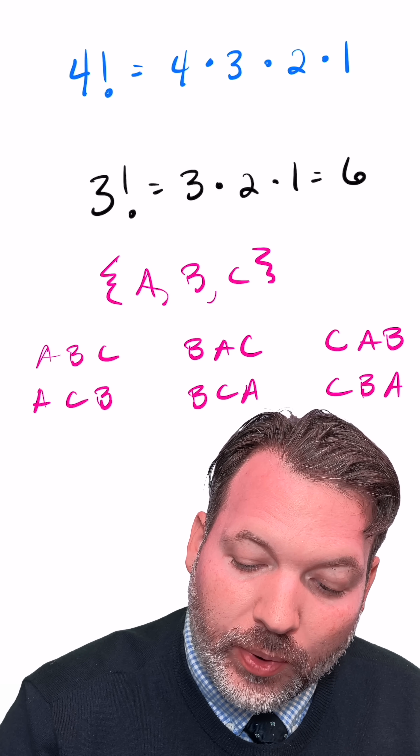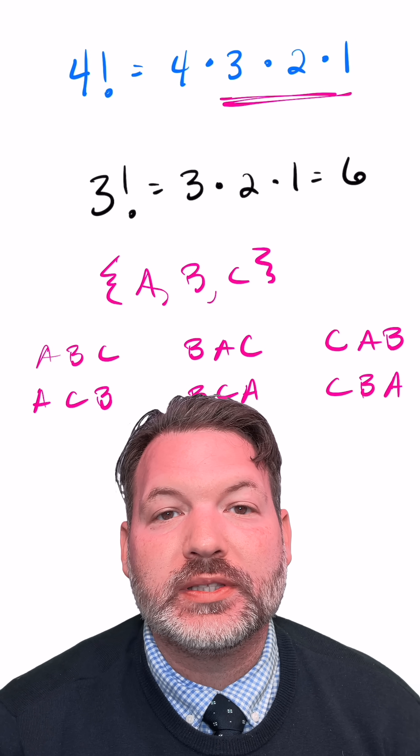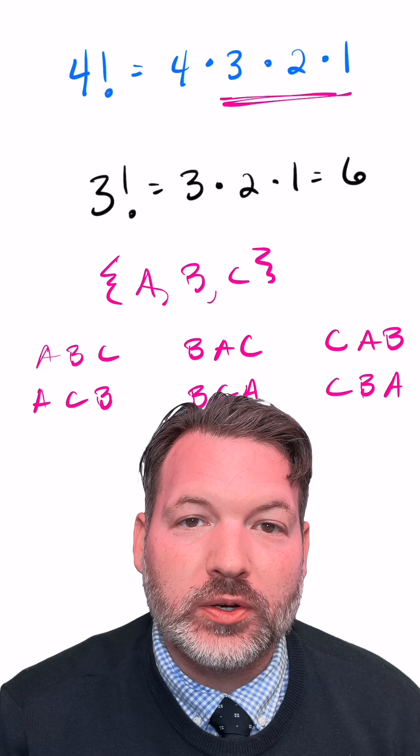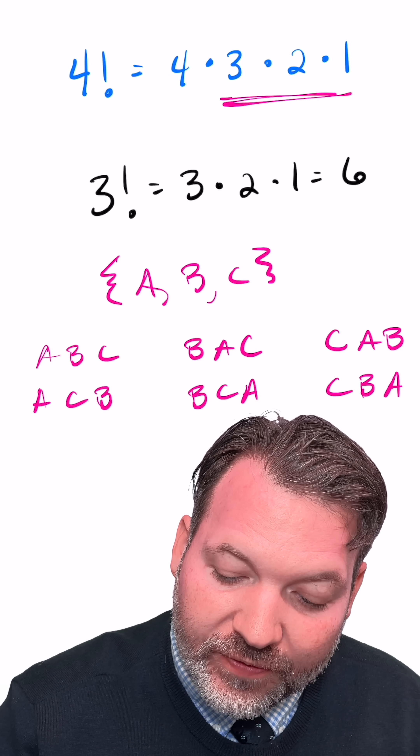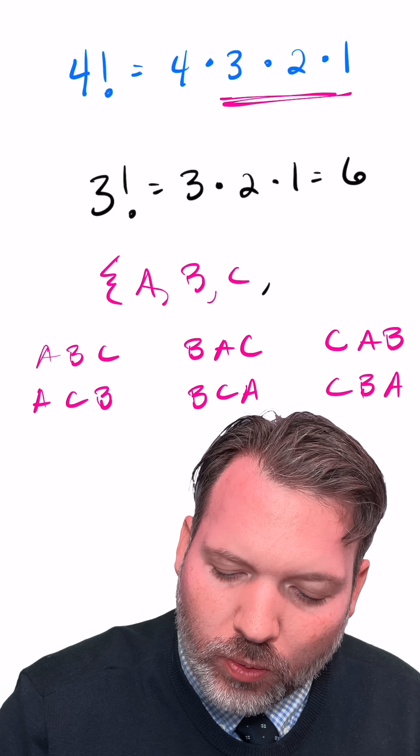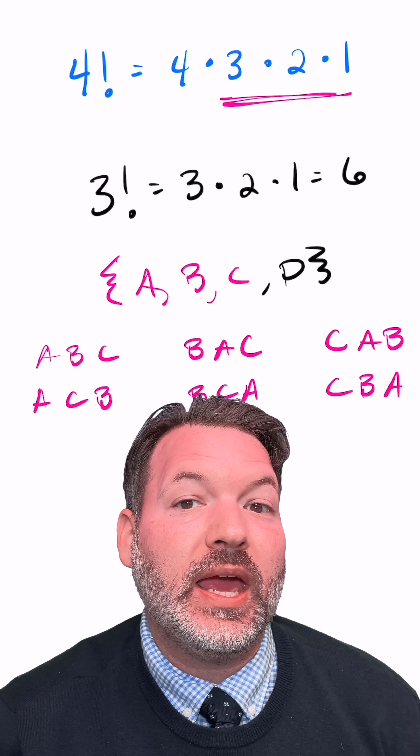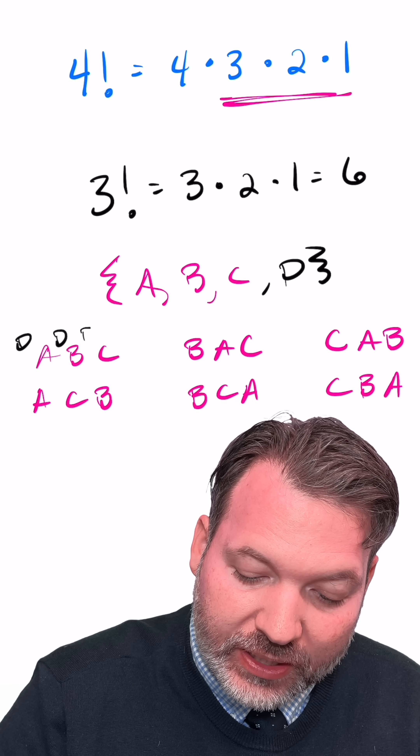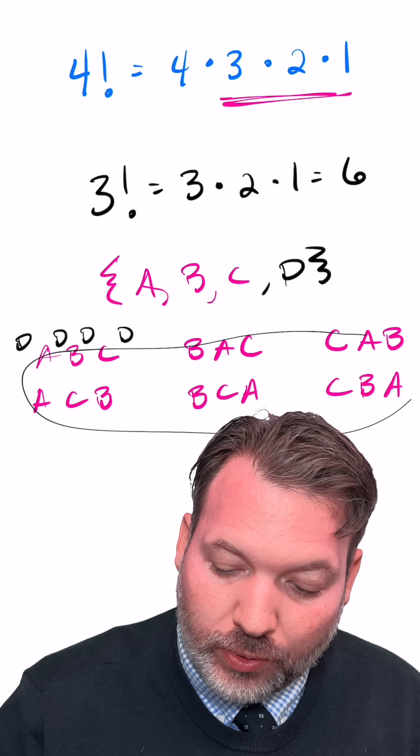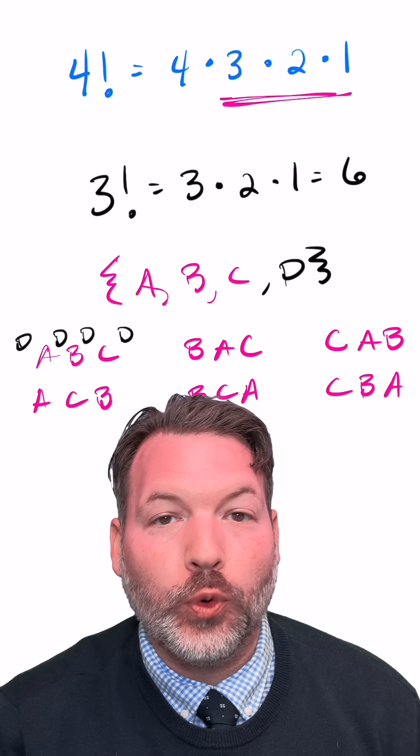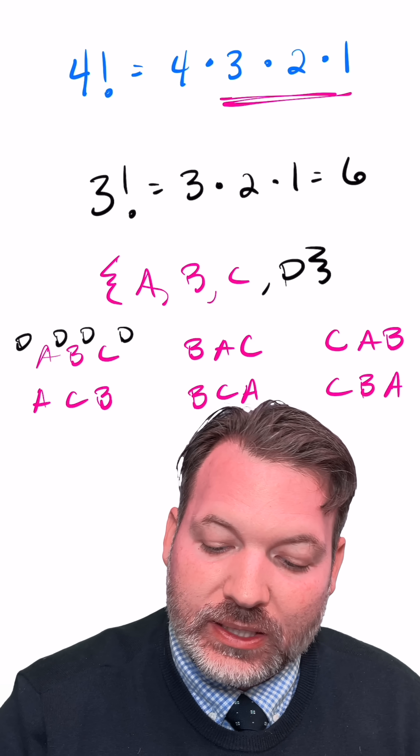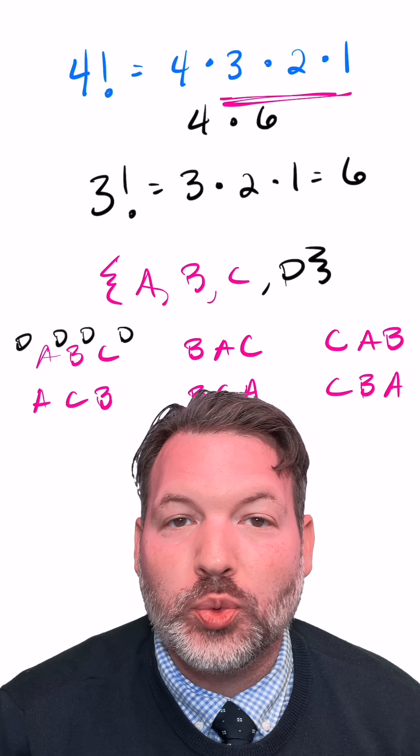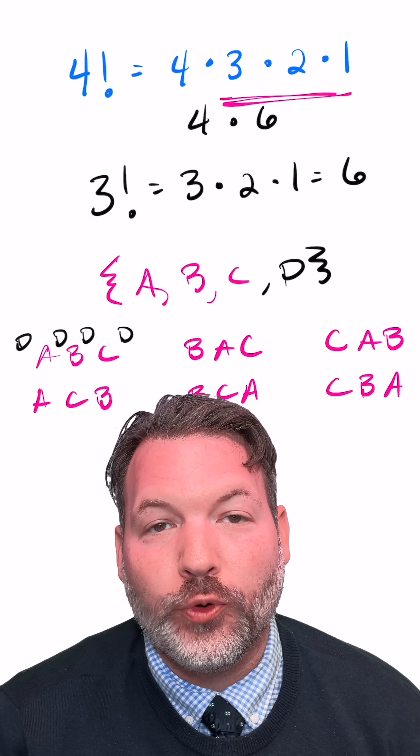This also gives us a great way to understand just why it is four factorial is the same as four times three factorial. For every single one of these arrangements of a, b, c, if I added on a fourth element and wanted to know how many ways there are to arrange a, b, c, d, all I have to do is pick one of four different places that d could go. So I've got six different arrangements, any one of which could have four different placements for d, and it's that four times six, or four times three factorial, that gives me back the 24 different ways to arrange four elements.